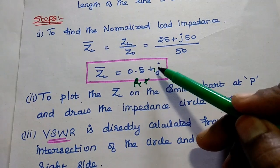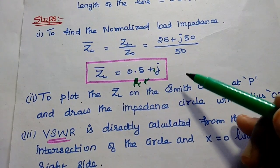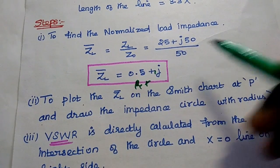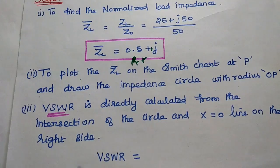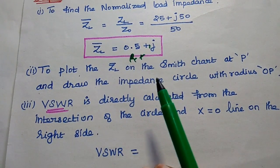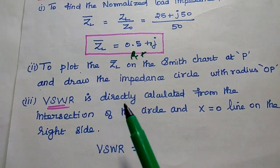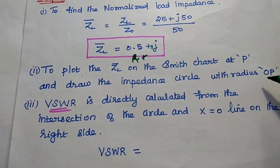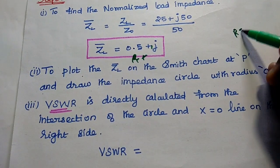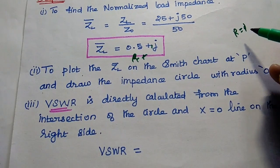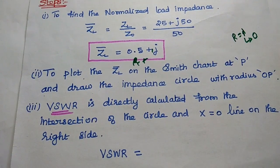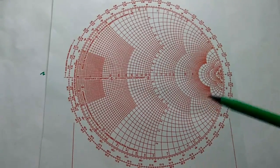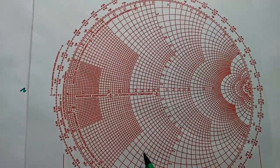The normalized load impedance is 0.5 plus j1, where 0.5 is the resistance value and j1 is the reactance value. Since it is plus j1, it represents inductive reactance on the Smith chart — that is, above the X equals 0 line. After getting this, we plot this normalized load impedance on the Smith chart at point P, and then draw the impedance circle with radius OP, where O is the center point at R equals 1.